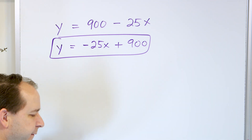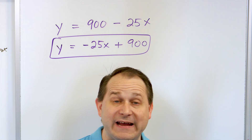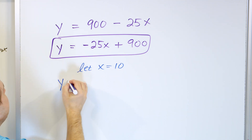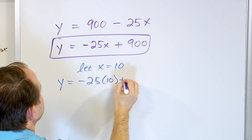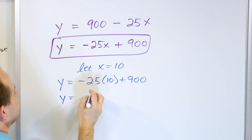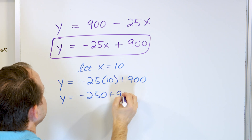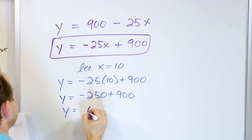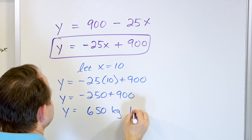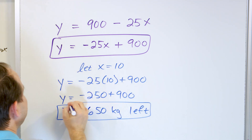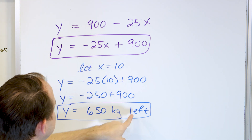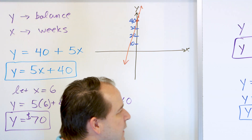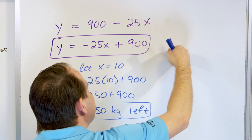After 10 days, we let X equal 10. Then the balance is negative 25 times 10 plus 900, which is negative 250 plus 900. Taking 900 minus 250 gives us 650 kilograms remaining after 10 days. So we started with 900 from the shipment and after 10 days we have 650 left. Whereas in the previous problem the graph went up to the right, here we expect a negative slope because everything is going down as time goes on.